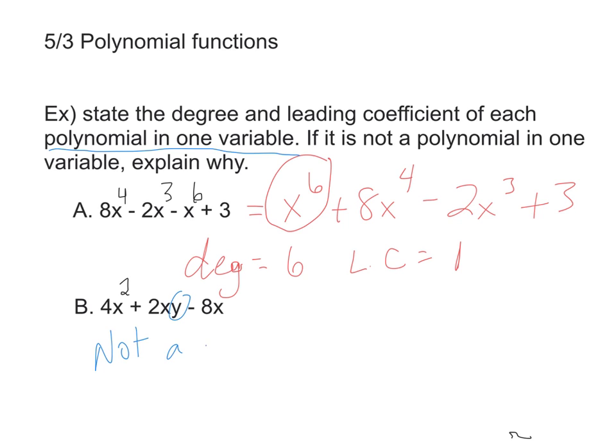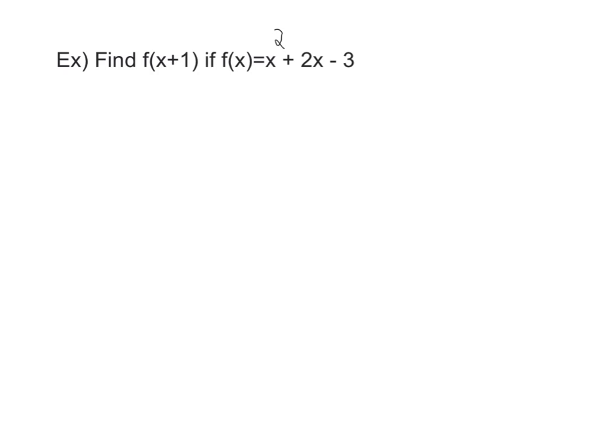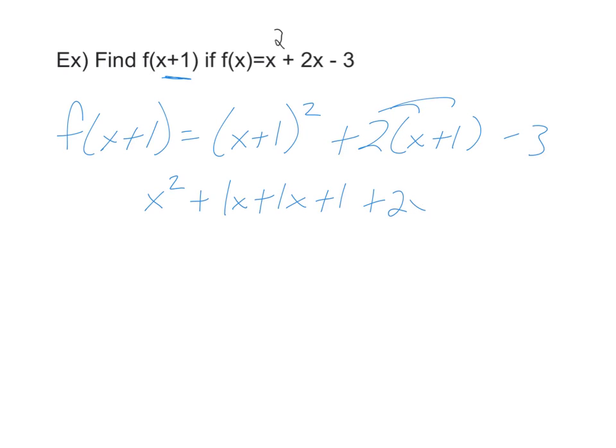Next example: find f of x plus 1 if f of x equals x squared plus 2x minus 3. This is something we've done in the past where you plug in x plus 1 wherever an x is. To start off with, f of x plus 1 equals x plus 1 squared plus 2 times x plus 1 minus 3. From there we'll simplify it. We'll do the x plus 1 squared, which is x squared plus 1x plus 1x plus 1, distribute plus 2x plus 2 minus 3.